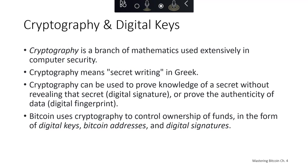Bitcoin is based on cryptography, which is a branch of mathematics used extensively in computer security. Cryptography means secret writing in Greek, but the science of cryptography encompasses more than just secret writing, which we typically refer to as encryption. Cryptography can also be used to prove knowledge of a secret without revealing that secret — for example, digital signatures — or prove the authenticity of data, like a digital fingerprint. These cryptographic proofs are the mathematical tools critical to Bitcoin and used extensively in Bitcoin applications and other cryptocurrencies.